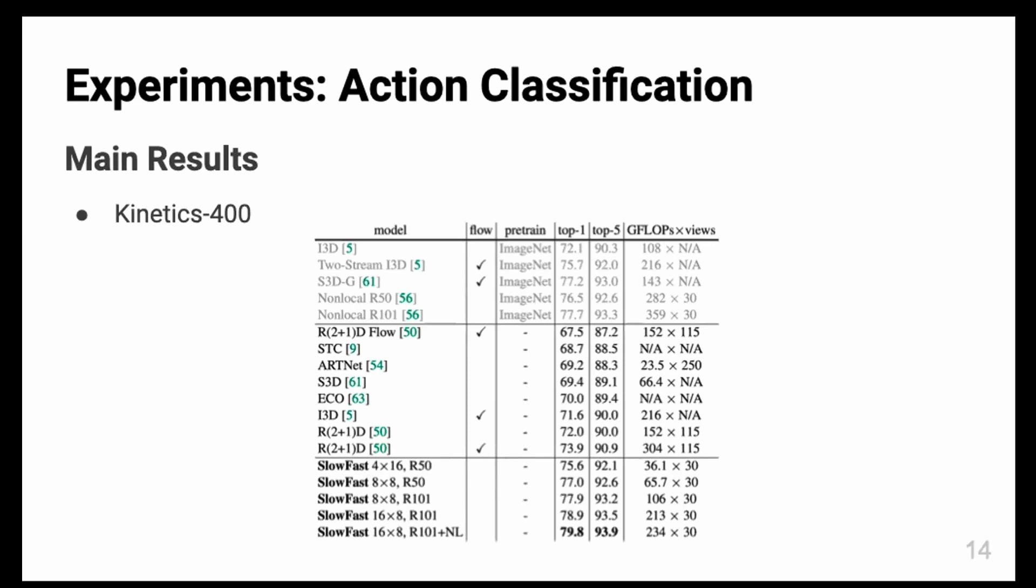Here, the number on the right of the SlowFast models is T, the frames the slow pathway gets, and τ, the temporal stride of the slow pathway. R50 and R101 mean ResNet-50 and ResNet-101. NL means the Non-Local Neural Network, which is proposed by another article.